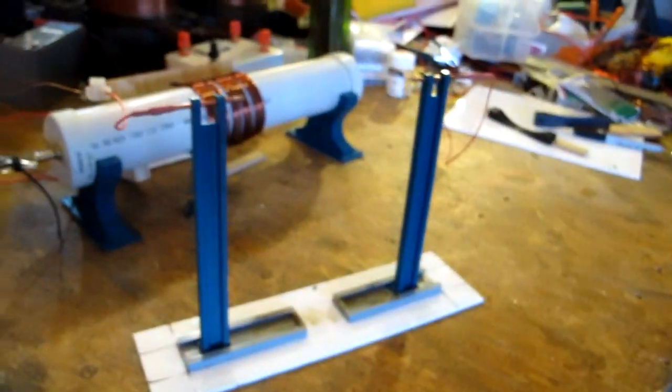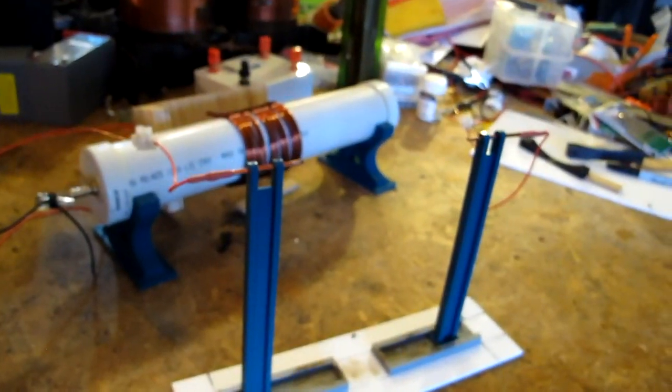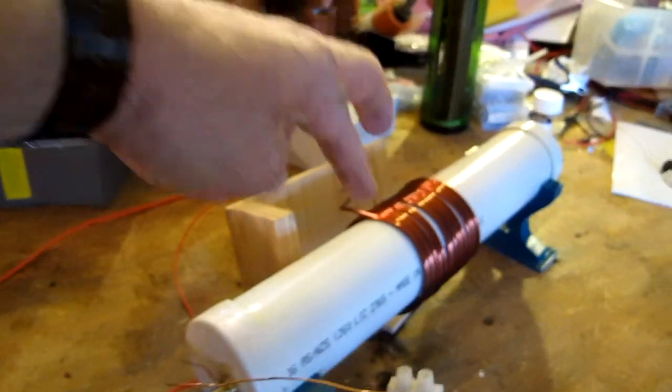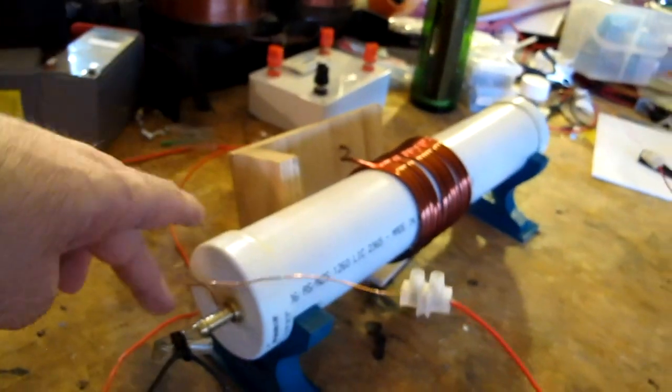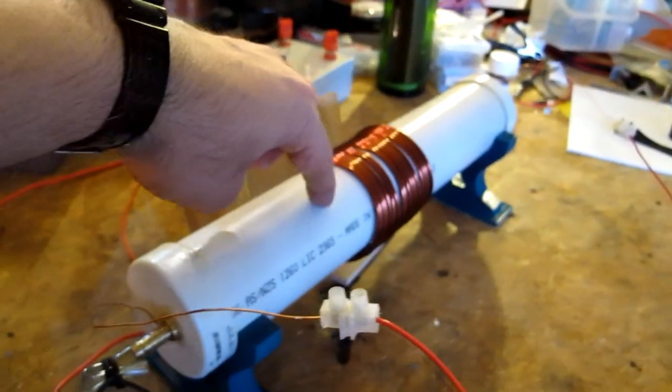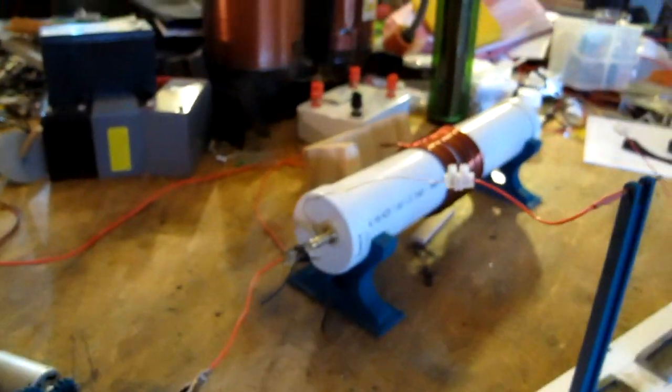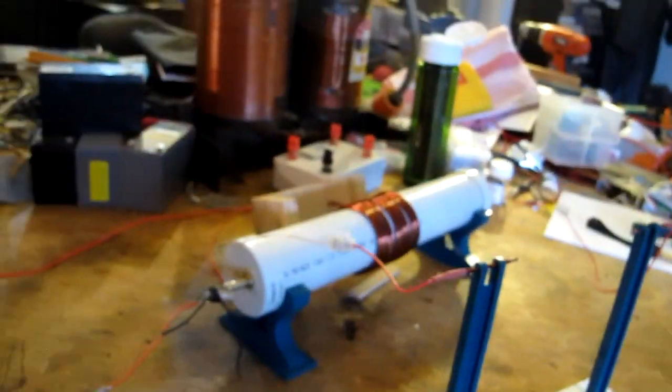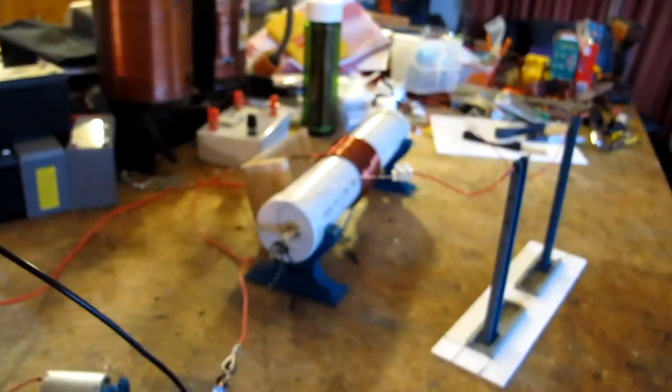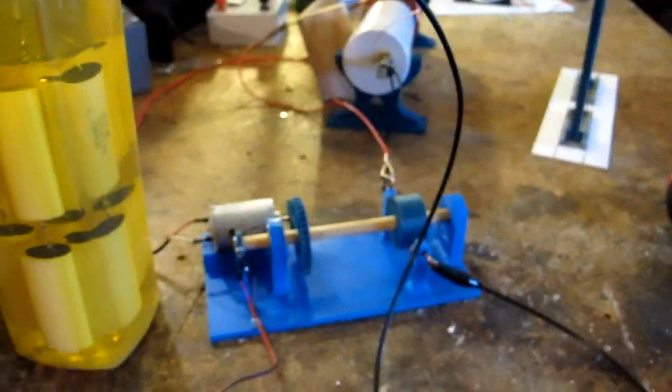Just hooked up to the current transformer at the moment, not pushing it too much further than that for now because it's starting to arc from the primary across to here. I can see little purple tendrils all across there, and I don't want to destroy this. It took a little time to make, so I hooked it up with the neon sign transformer and the trusty variac and give it a go.